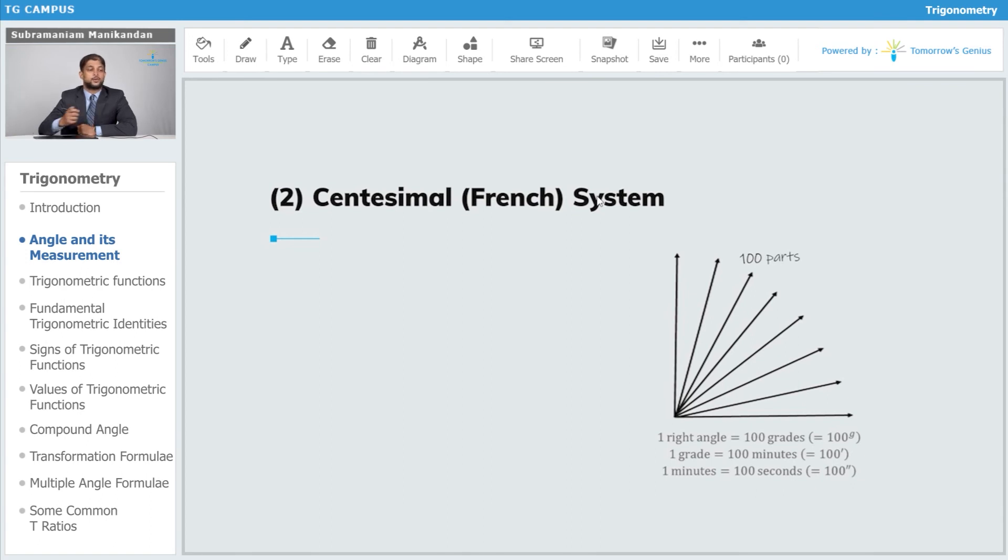And now again, as I said earlier, for very large objects, even one of these grades proves to be too large in terms of distance. So therefore, one grade is further subdivided into 100 minutes, and each of these minutes is divided into 100 seconds.